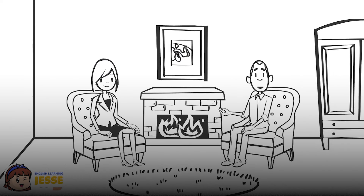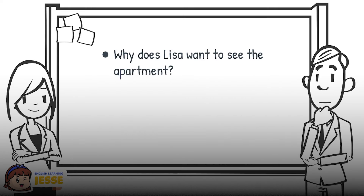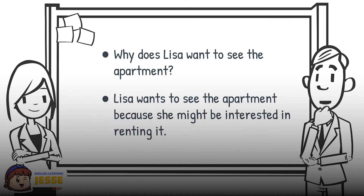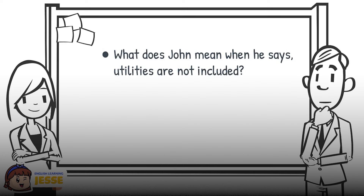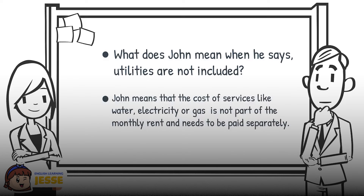I hope you found the repeat listening helpful. Let's dive into some discussion questions about that conversation. Why does Lisa want to see the apartment? Lisa wants to see the apartment because she might be interested in renting it. What does John mean when he says utilities are not included? John means that the cost of services like water, electricity, or gas is not part of the monthly rent and needs to be paid separately.